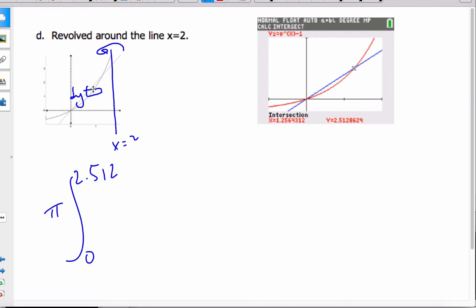And my radius is going to the outside one is y over 2. So it's 2 minus y over 2 squared minus 2 minus ln y plus 1 squared dy.